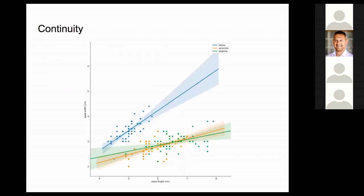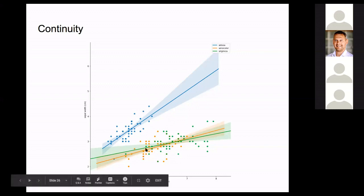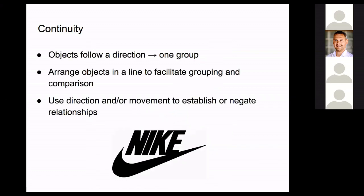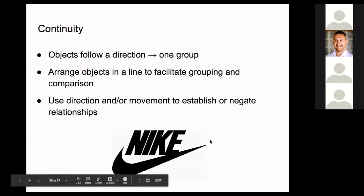The next principle is continuity: if objects follow one direction, they're perceived as one group. In data visualization, we can put a line or curve — like a linear model fit — as a guideline. Groups following that direction are perceived as one group, while a group deviating from it is perceived as different. The FedEx logo is an example where we follow the direction.